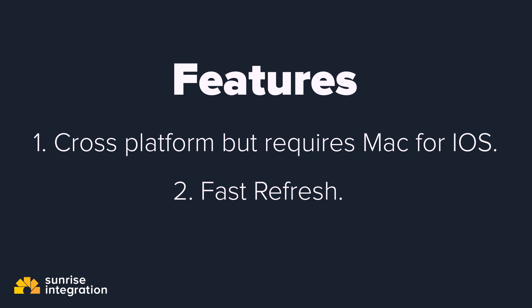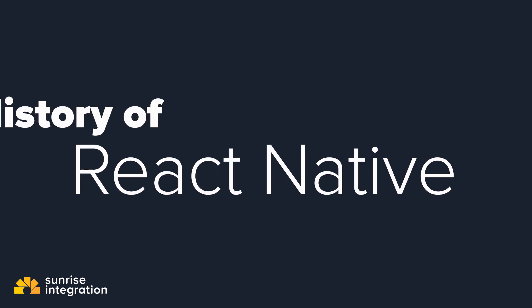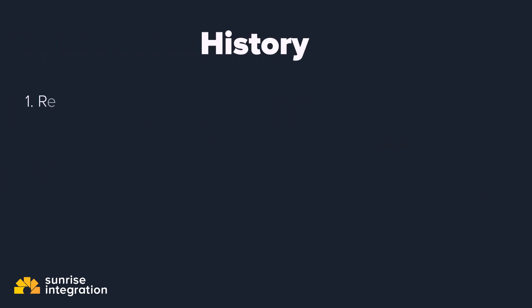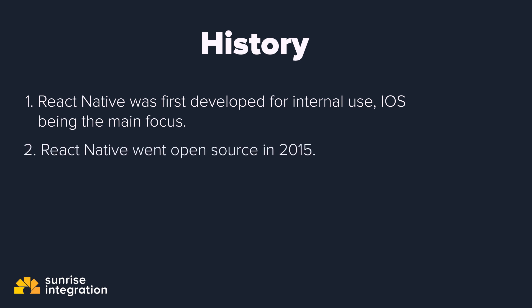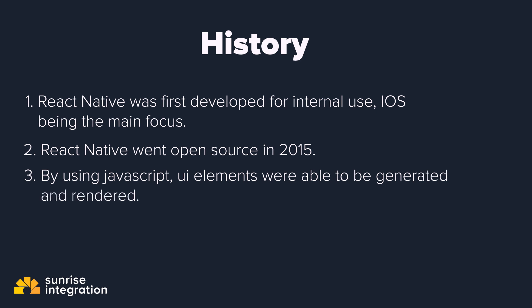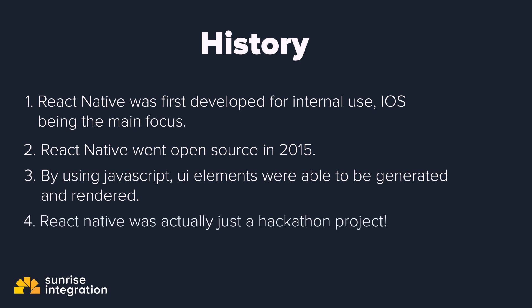Now that we know a bit more about React Native, let's check out some history. React Native was developed by Facebook for its internal app development. At the start, the only platform of focus was iOS, and it only went open source in March of 2015. The idea was that by using JavaScript code, it was possible to generate UI elements for iOS from a background JavaScript thread, which then basically became the basis for the React web framework. React Native was actually a hackathon project in the summer of 2013. iOS was first supported in March of 2015, and Android was later supported in September of 2015.